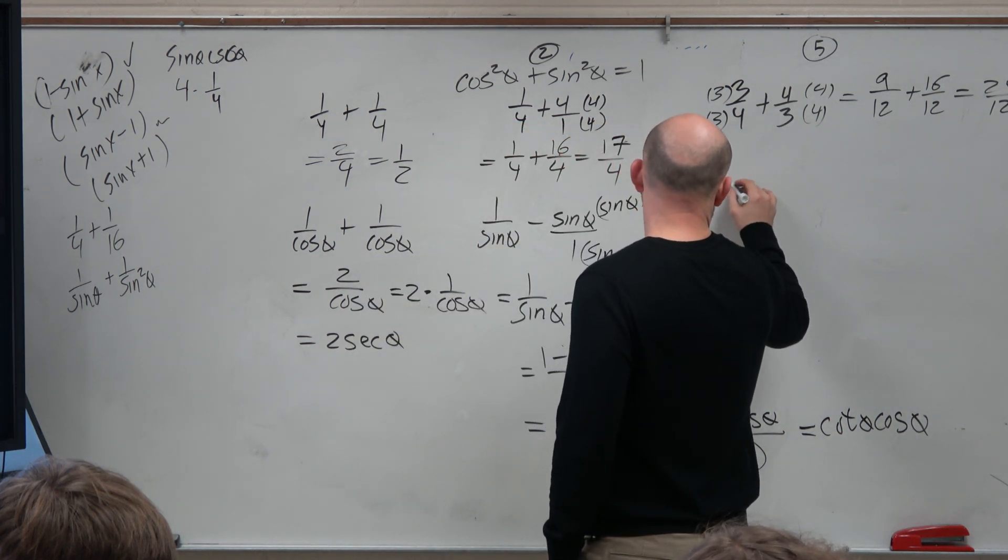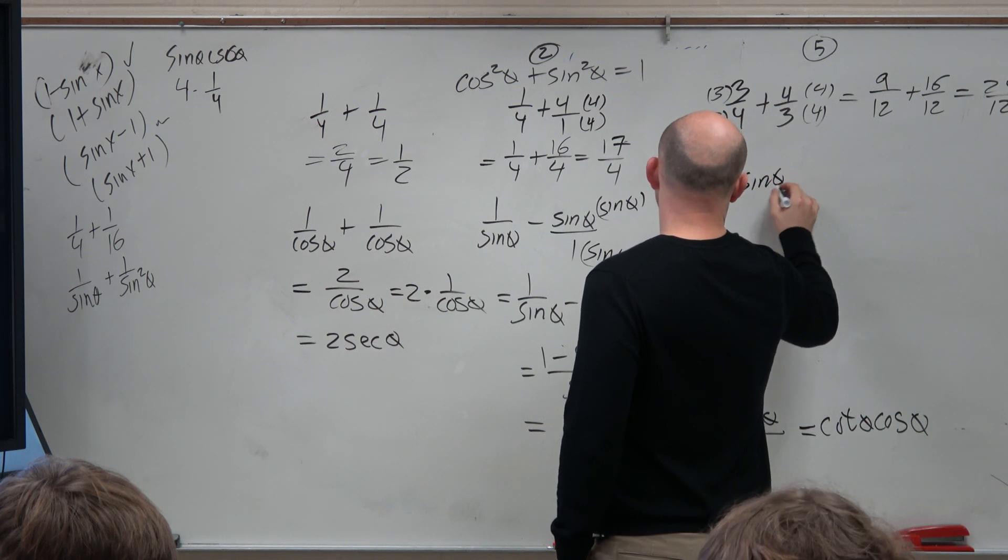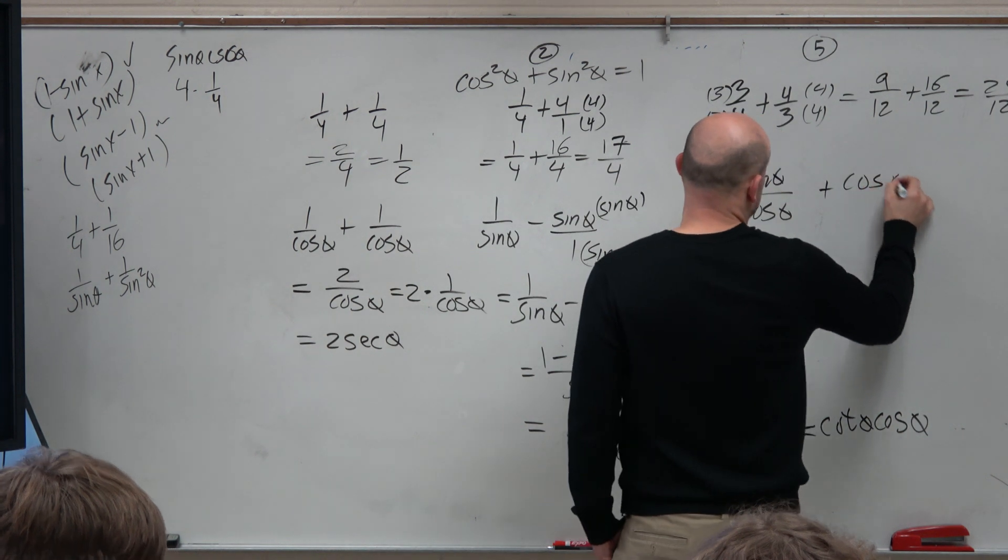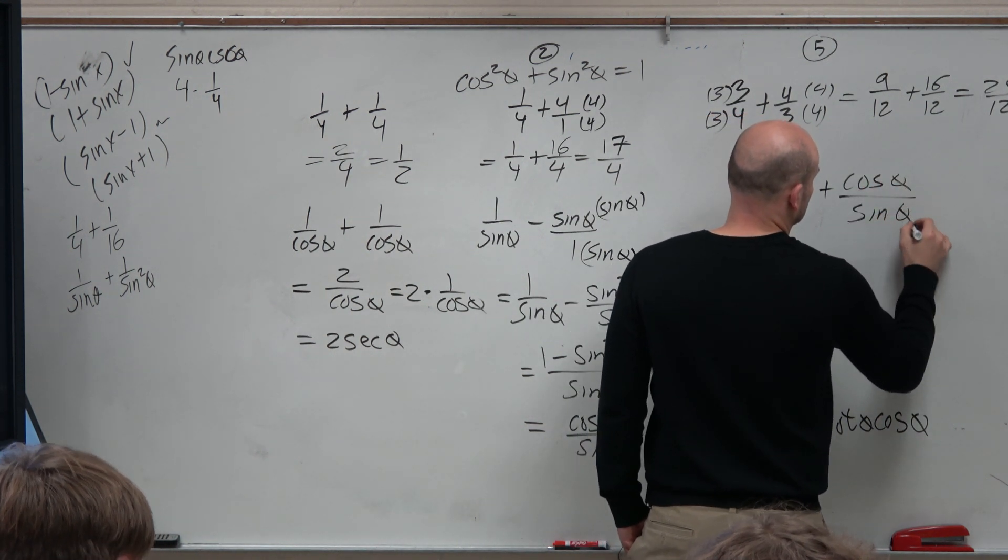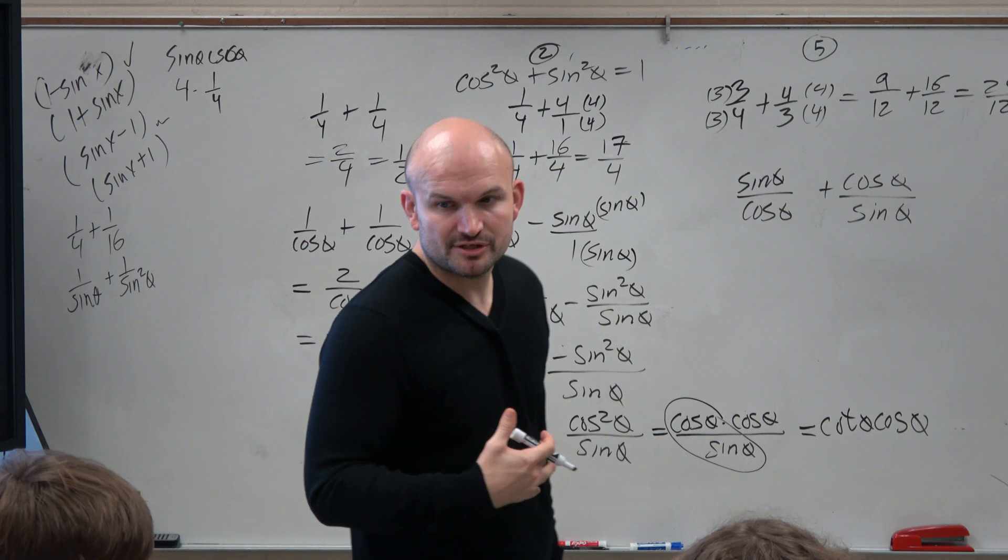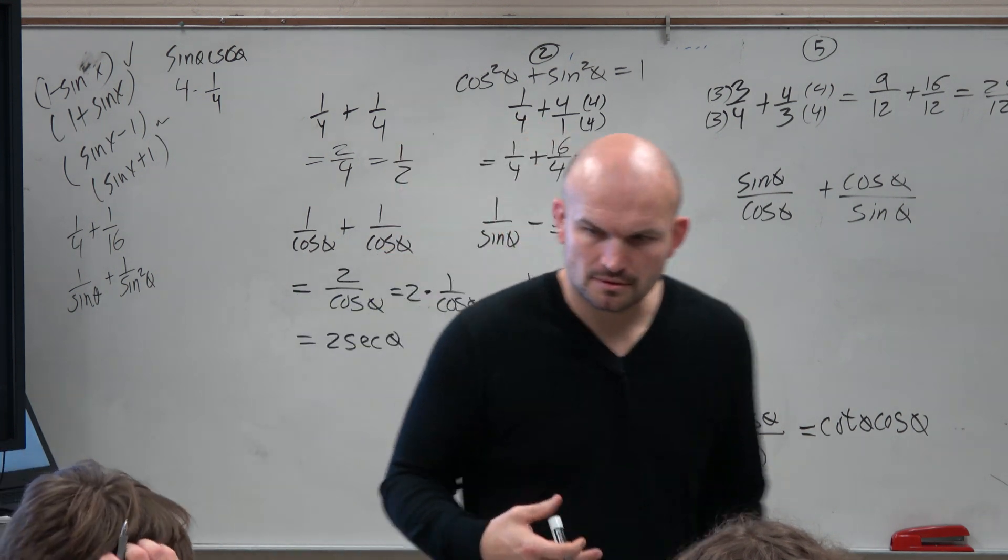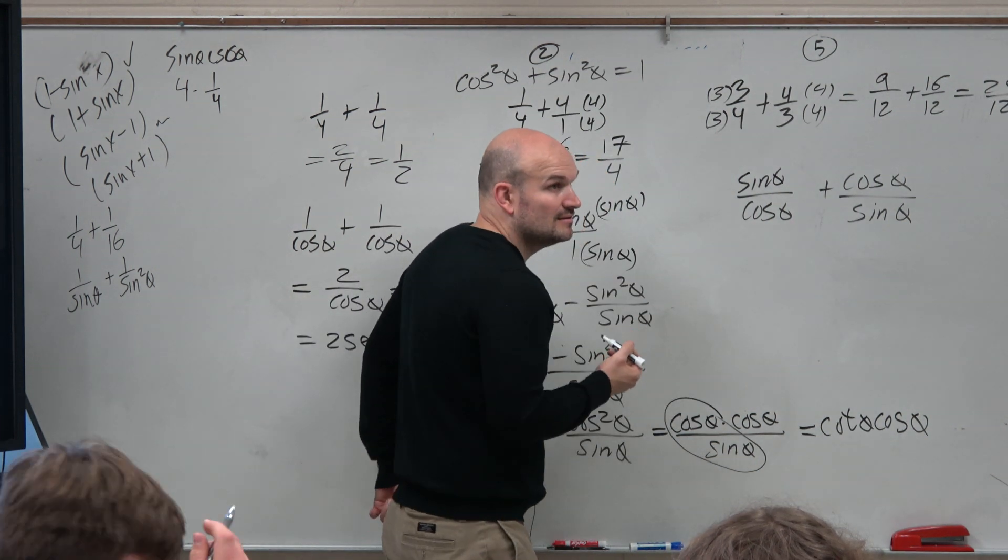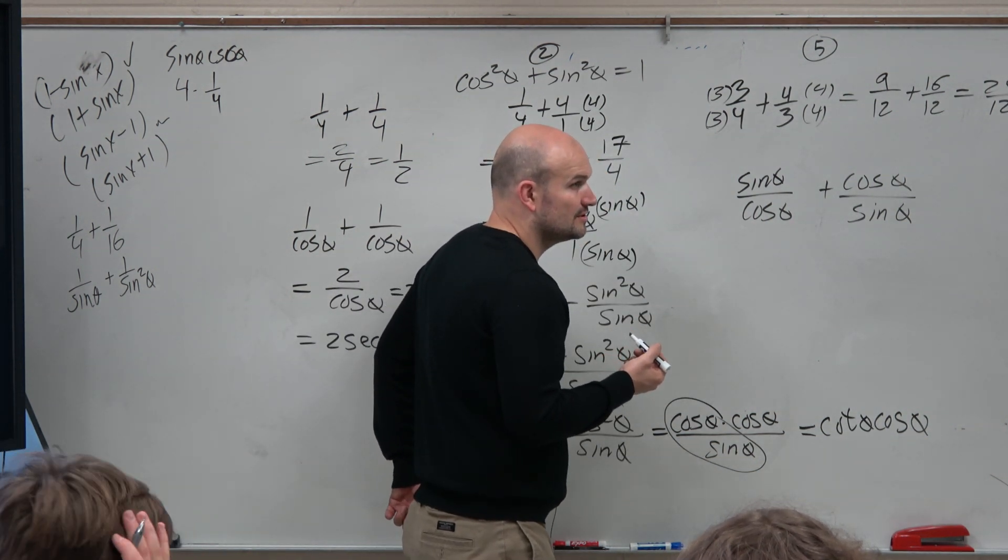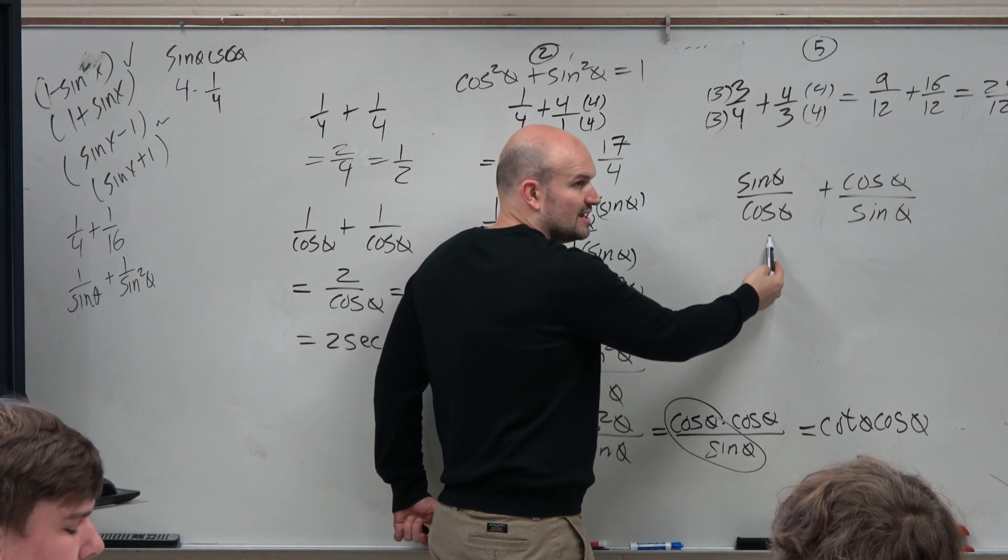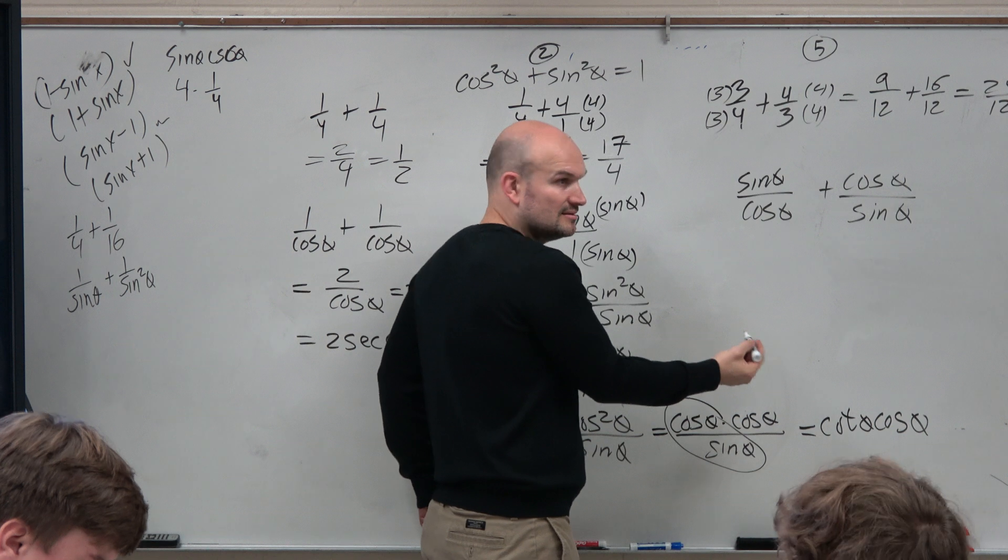So if I gave you something like this, sine of theta over cosine of theta plus cosine of theta over sine of theta, finding the LCD is rather simple. Just like 3 and 4 there, I just multiplied them, right? To give me 12, give me the LCD. So in this case, I'm going to do the exact same thing. So what's the LCD here? Well, the LCD here was 3 times 4. So the LCD here is going to be cosine of theta times sine of theta, right? I'm not trying to confuse you.